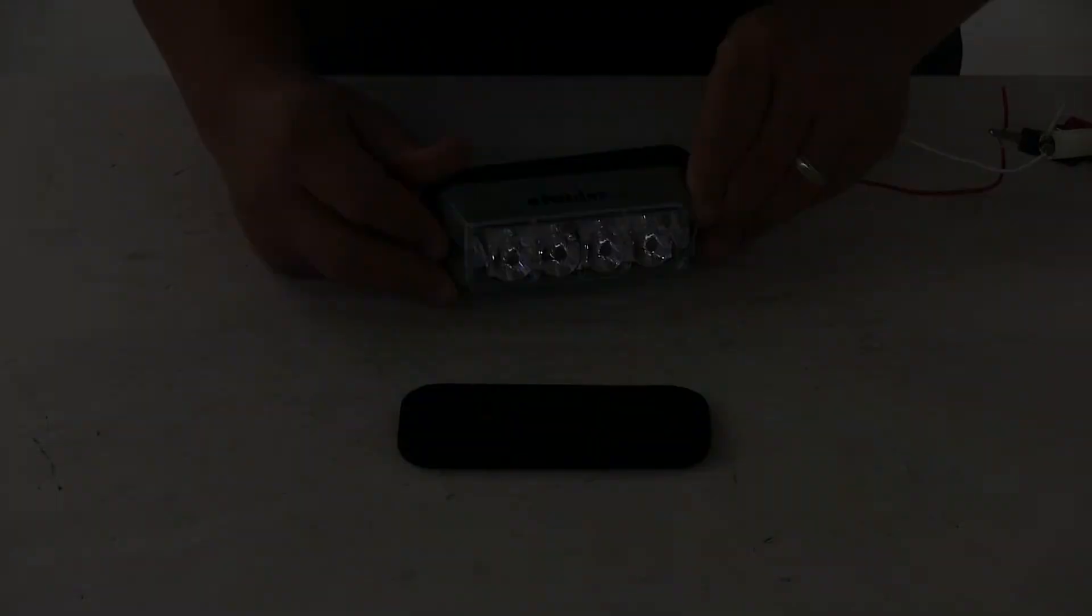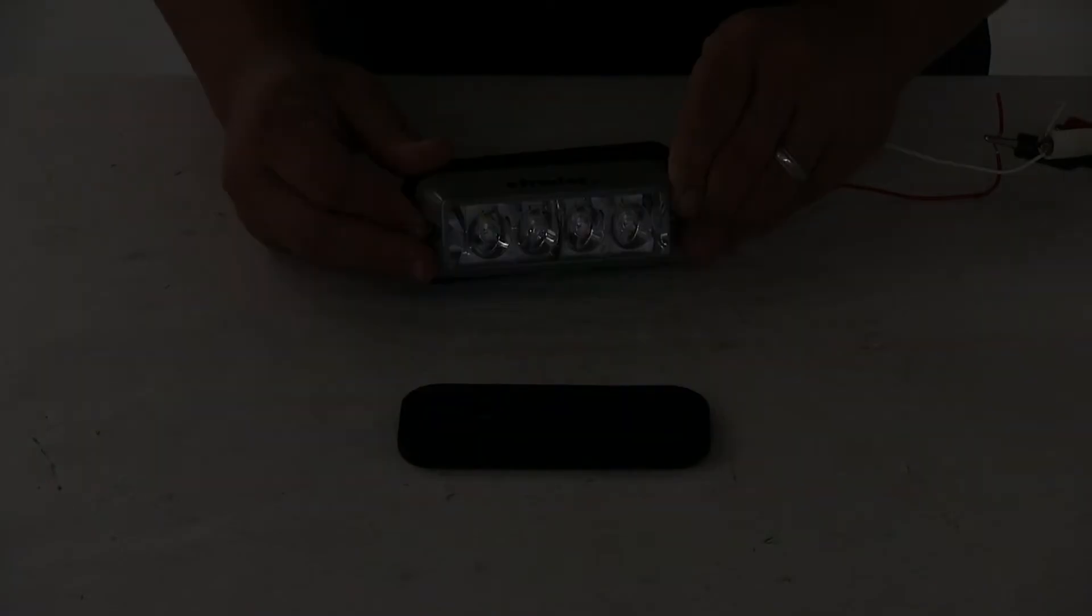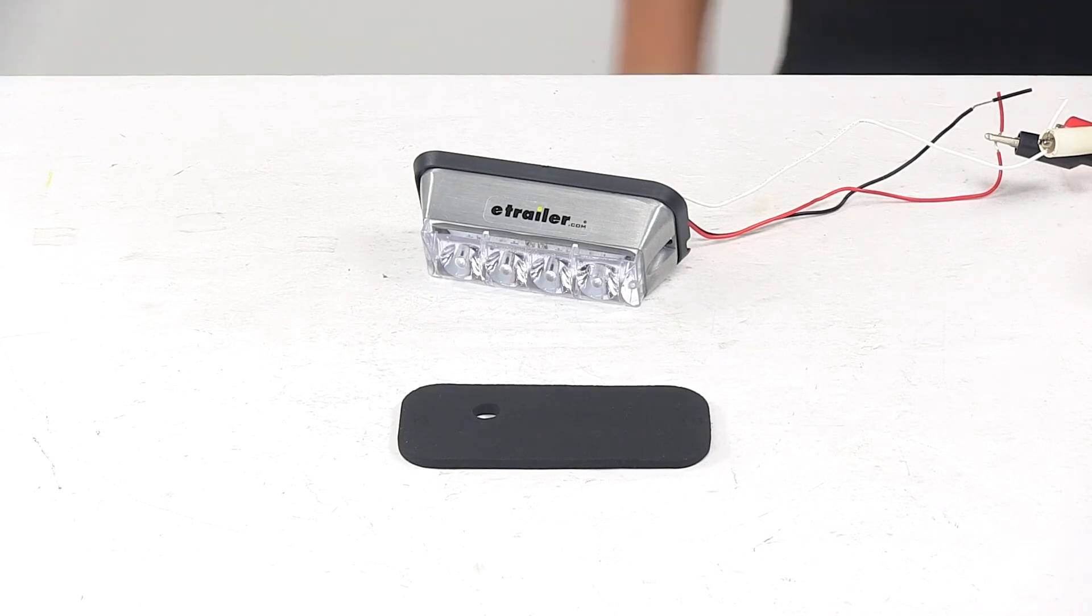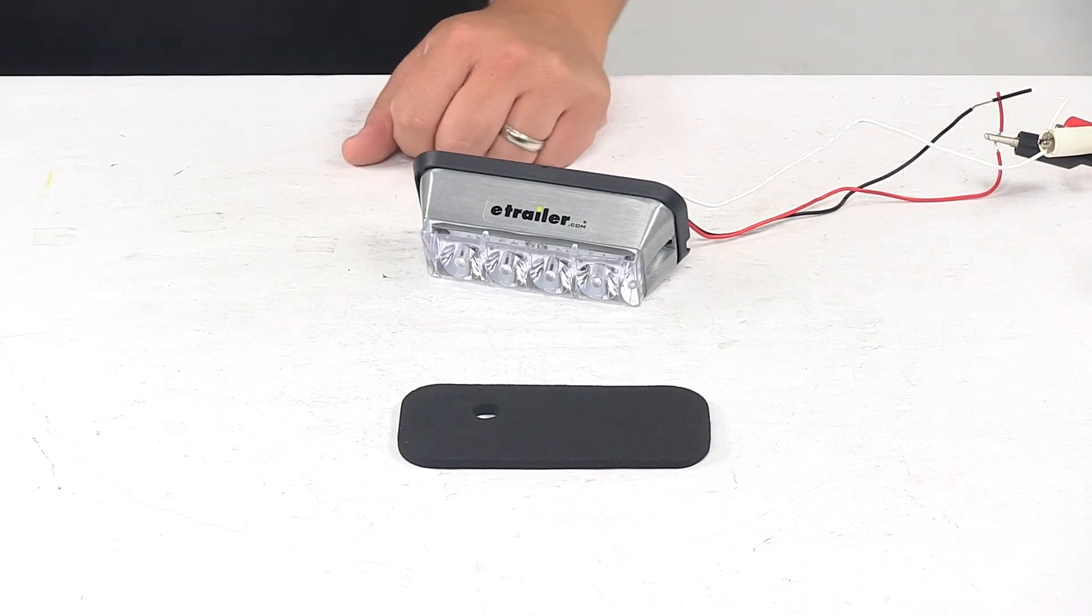Voltage is 12 to 24 volts and the amperage is 0.54 amps at 12 volts. That's going to do it for today's look at the four LED strobe light.